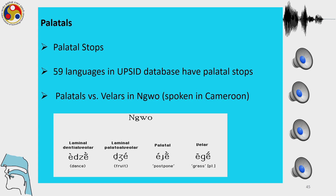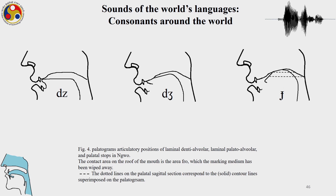It is possible to have all four places of articulation — alveolar, palato-alveolar, palatal, and velar — in a language. In Ngo, these are the articulatory positions of laminal denti-alveolar: the blade of the tongue makes an occlusion in the alveolar region between the dental and the alveolar region. Then we have the laminal palato-alveolar and the palatal sound — these are the 3 palatal stops in Ngo. The dotted lines on the palatal sagittal section correspond to the contour lines superimposed in the palatogram.